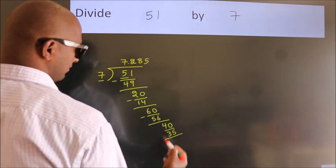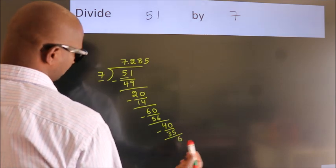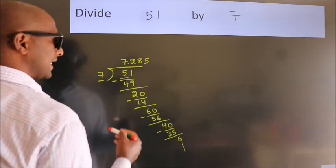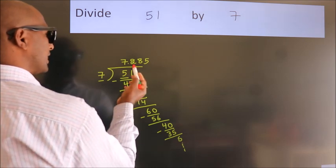Now we subtract. We get 5. And the division continues. It is enough if we do up to 3 decimal places.